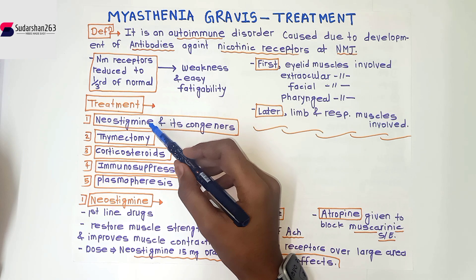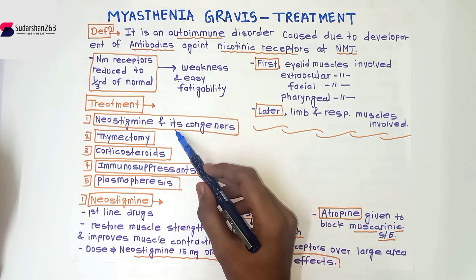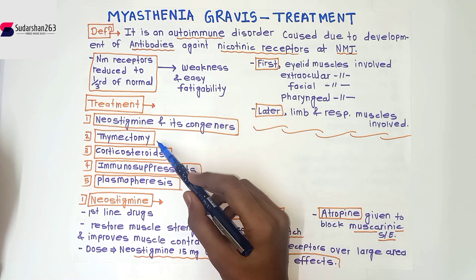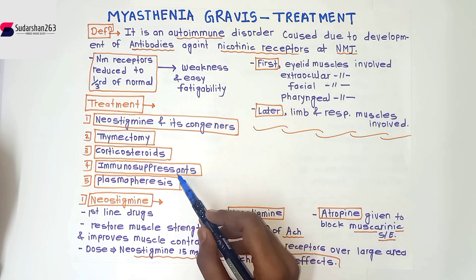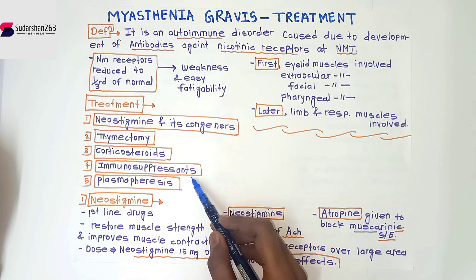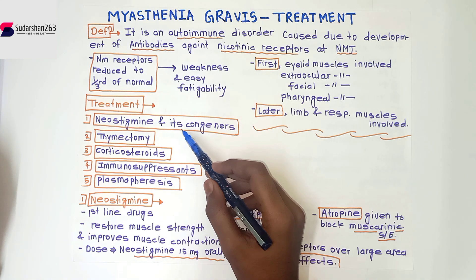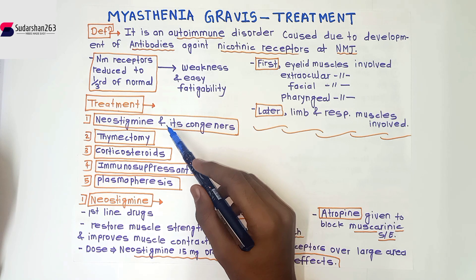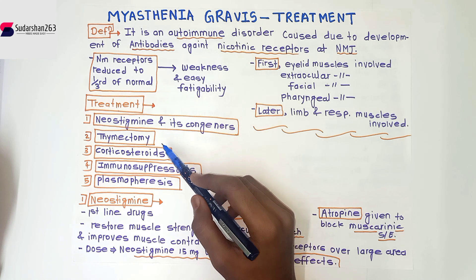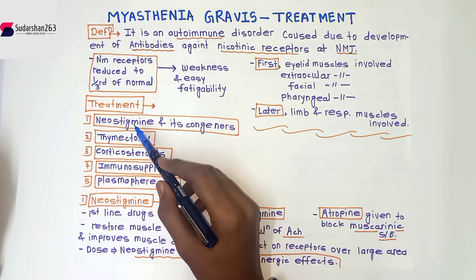Now the treatment, which is the most important part. There are five treatments available for myasthenia gravis: first is neostigmine and its congeners, second is thymectomy, third is corticosteroids, fourth is immunosuppressants, and fifth is plasma pheresis. We will now go through each one.